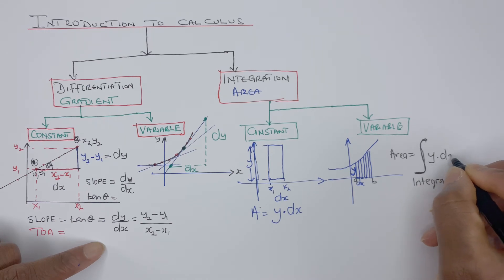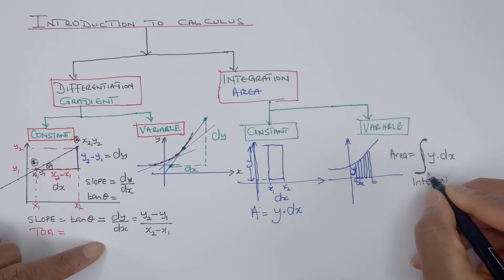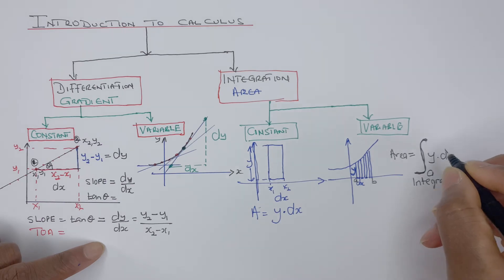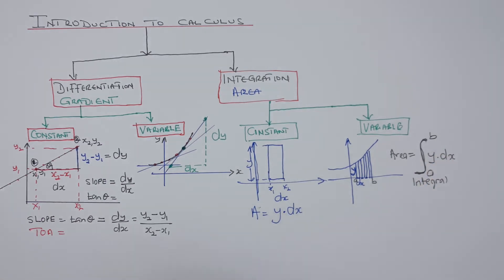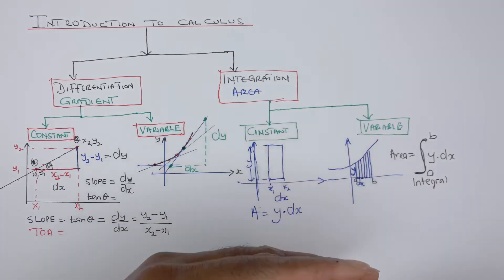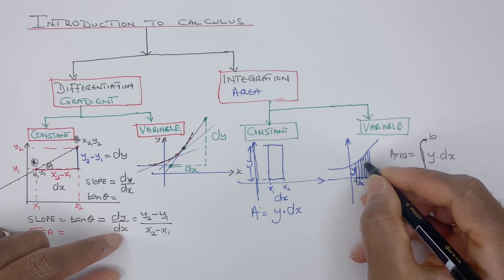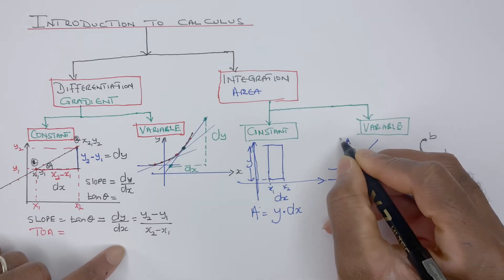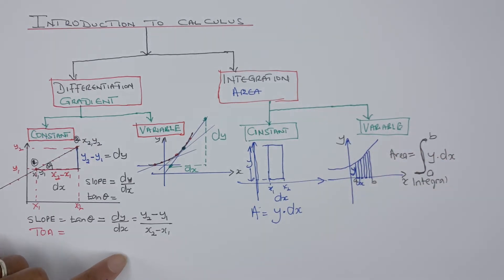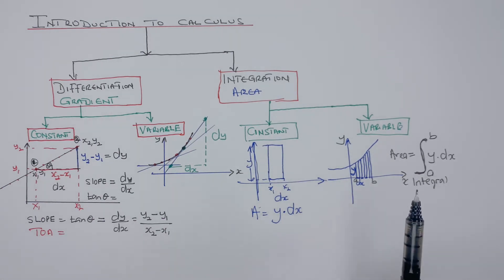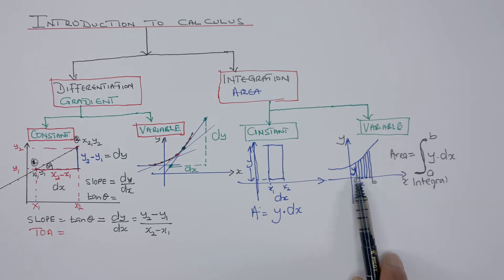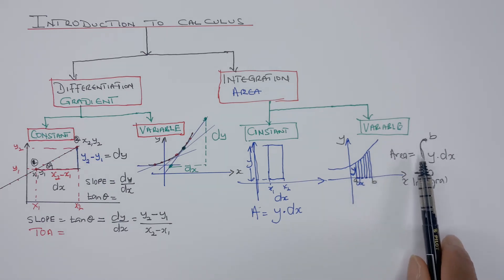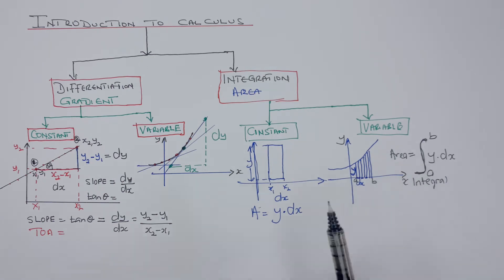So the variable area equals the integral of y times dx from a to b. That's what integration means — you add all the areas together and minimize error. We come to a point where we would have no errors. So y is the height and dx is the little difference in x, and that is how you find the area using little differences in x multiplied by the function y.